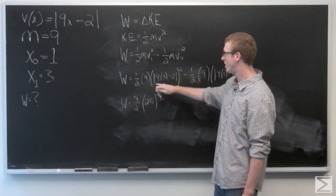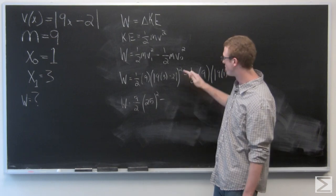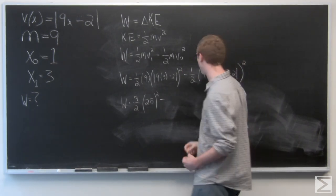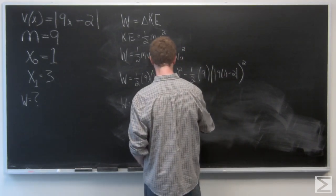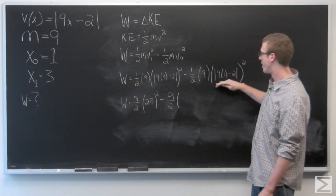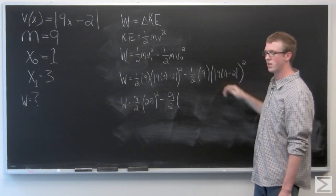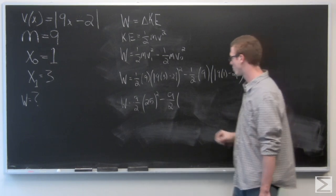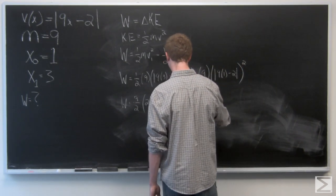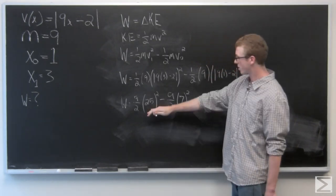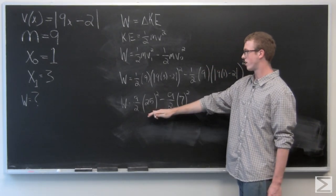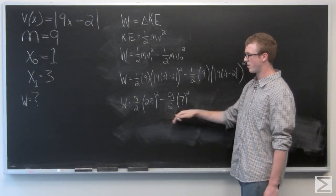As you can tell in this problem, the absolute value isn't going to matter that much because the velocity does end up getting squared in the end anyways. 9 times 1 minus 2 gives a final velocity of 7 which we need to square. So we square these and we get 9/2 times 625 and 9/2 times 49.